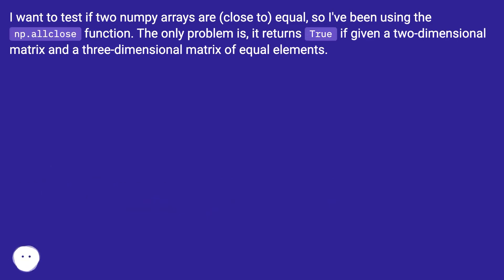I want to test if two numpy arrays are close to equal, so I've been using the np.allclose function. The only problem is it returns true if given a two-dimensional matrix and a three-dimensional matrix of equal elements.